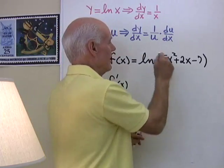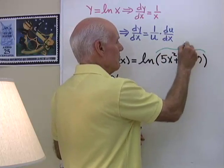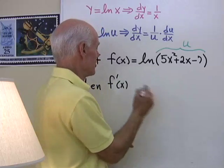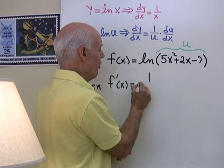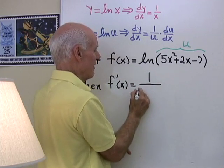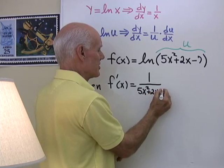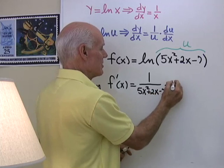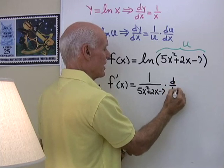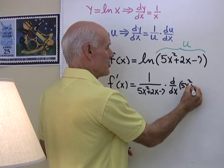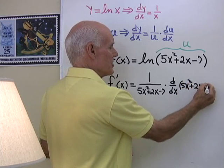Well this right here, this part, is the u part. It's some other function of x. So when I do that derivative, it's just 1 over that u, which is 5x squared plus 2x minus 7, times the derivative with respect to x of that argument, 5x squared plus 2x minus 7.